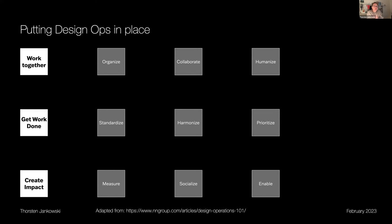This is the full Design Ops picture: the triage of Work Together, Get Work Done, and Create Impact — with dimensions of organizing, collaboration, humanizing, standardizing, harmonizing, prioritizing, measuring, socializing, and enablement. Nielsen Norman Group covers this well — Thorsten will share the link. Second recommendation: do agile, do cross-functional, do cross-cultural work.